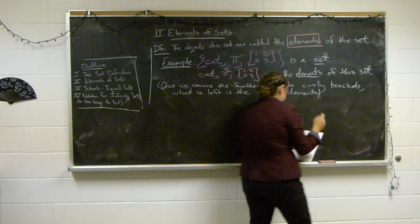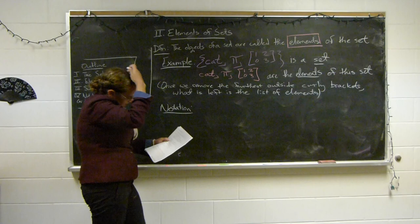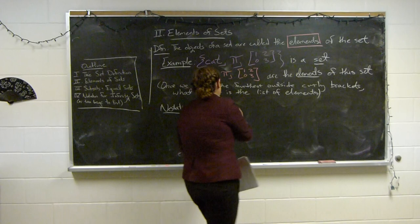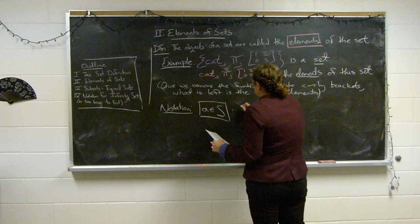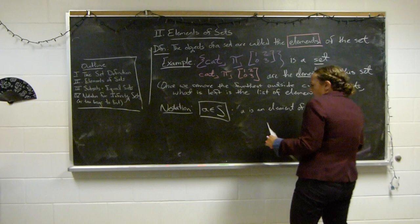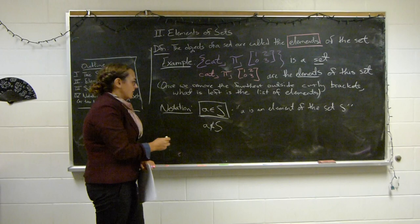Here's the notation. If S is a set, we write a ∈ S to mean that a is an element of the set S. If a is not an element of the set S, we put a line through it — a ∉ S — to denote 'not an element.'